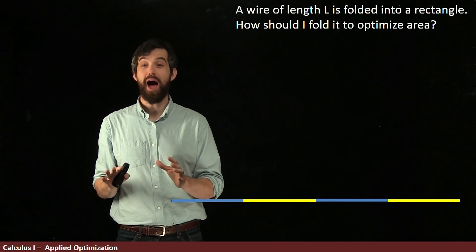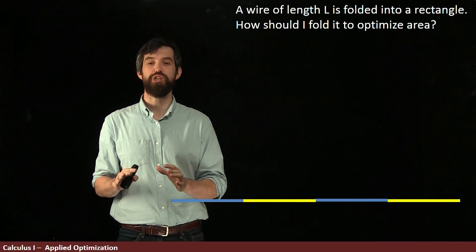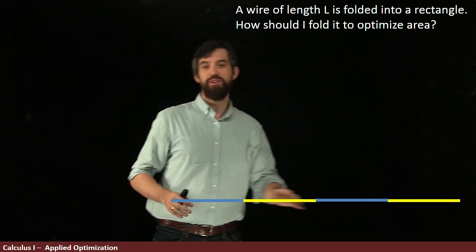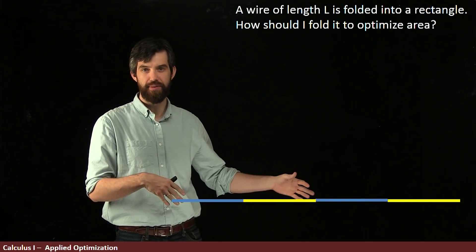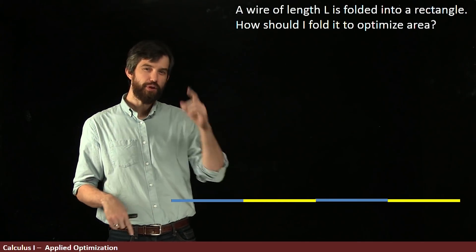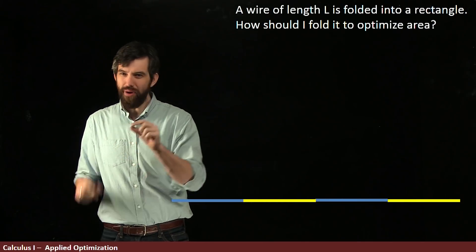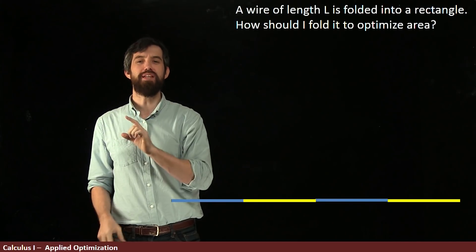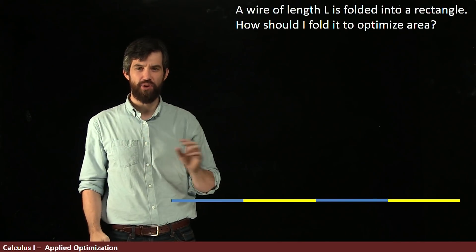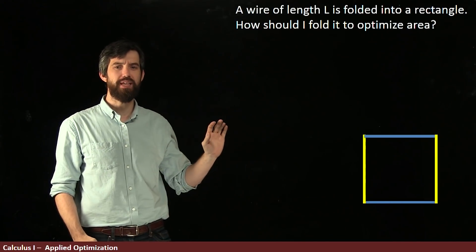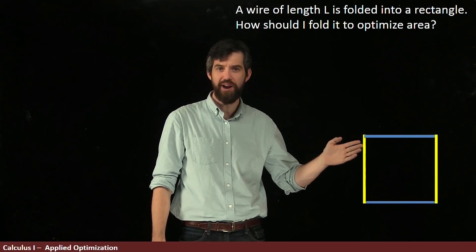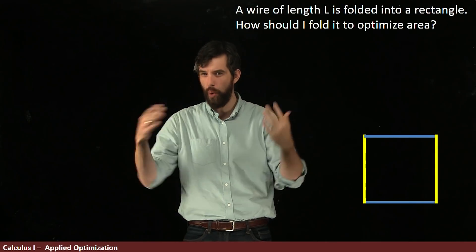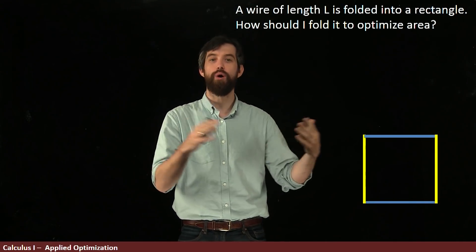In this optimization problem, I want you to imagine a wire like the one I've written down here — I've color-coded it a little bit. The question is: how can I take this wire and fold it up into a rectangle, something that looks like this? So the same wire is being moved around into either a square or a rectangle.